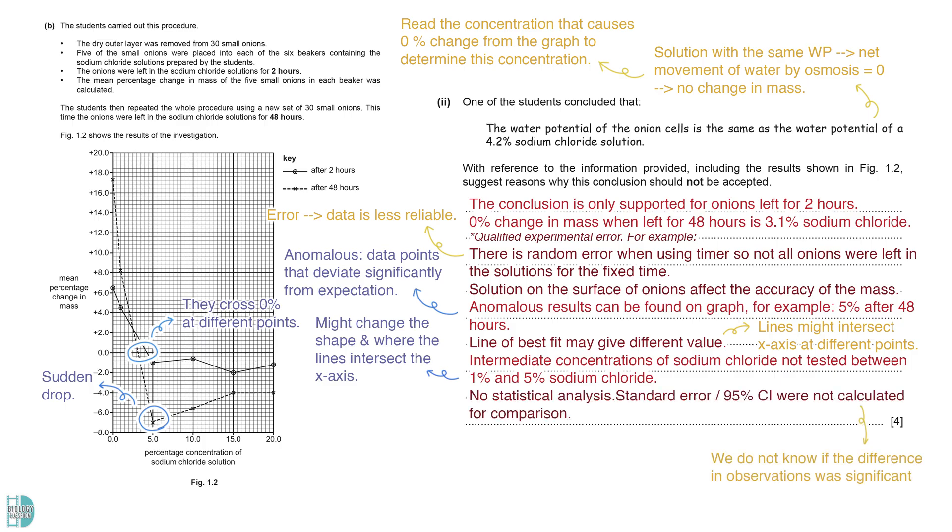No statistical analysis was done. Calculation of the standard error or 95% confidence interval was also not done for the comparison, so we do not know if the difference in observations was significant or not. Lastly, not all onion cells have the same water potential. We do not know how much the results are affected by the water potential in each sample.